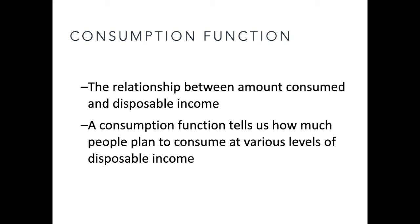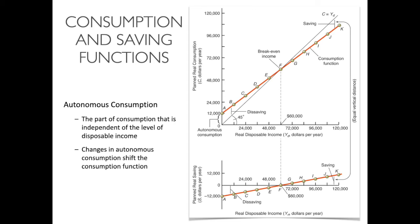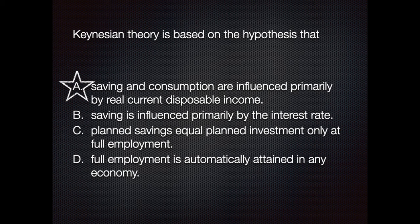The consumption function is the relationship between the amount consumed and disposable income. A consumption function tells us how much people plan to consume at various levels of disposable income. Keynesian theory is based upon the hypothesis that: A, saving and consumption are influenced primarily by real current disposable income. The answer is A — saving and consumption are influenced primarily by real current disposable income.